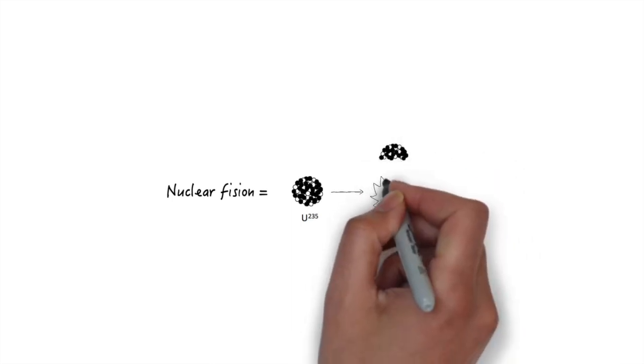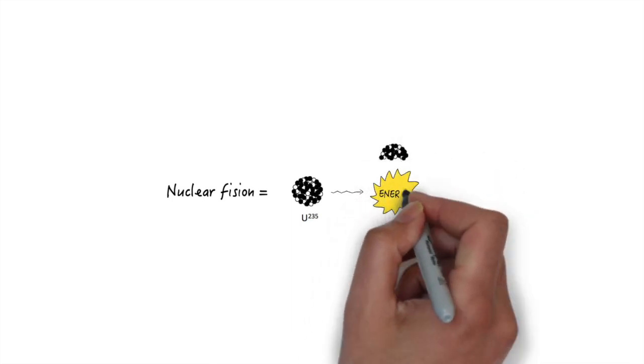Atomic bombs operate on something called nuclear fission. Nuclear fission is basically an atom splitting. When an atom splits, it releases a ton of energy.